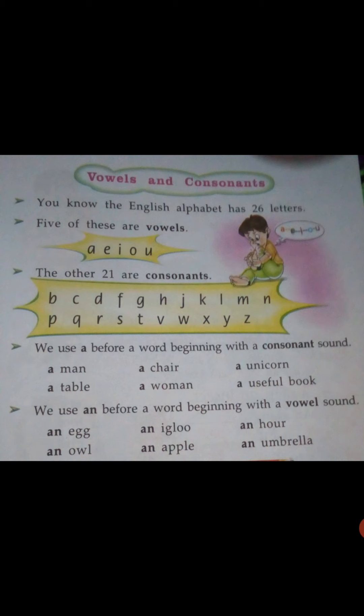And who are consonants? B, C, D, F, G, H, J, K, L, M, N, P, Q, R, S, T, V, W, X, Y, Z — these are consonants. There are 5 vowels and 21 consonants.